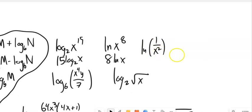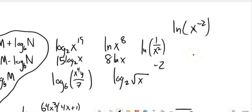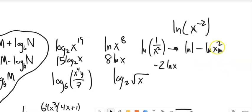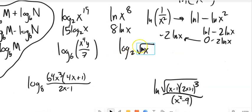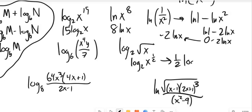For 1 over x squared: x squared is x to the negative 2 power, so this becomes negative 2 times the natural log of x. Alternatively, since this is division, we could write natural log of 1 minus natural log of x squared, then bring the 2 out front: natural log of 1 minus 2 times natural log of x. Since log of 1 is always 0, that's 0 minus 2 natural log of x — same result. For log base 2 of the square root of x, square root is a 1/2 power, so this is log base 2 of x to the 1/2, which expands to 1/2 times log base 2 of x.